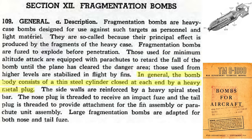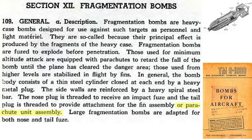The bomb's explosive fill container is a thick steel cap attached to a thin steel cylinder. The bomb's outer body is made from a thick steel helix coil. The bomb's nose fuse is contact triggered. The tail assembly contains a stabilizing fin or parachute. Large fragmentation bombs adopt a tail fuse in addition to a nose fuse.